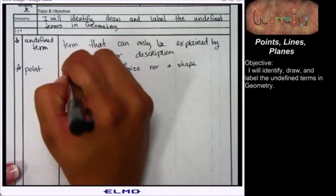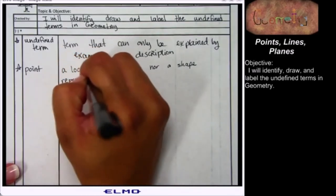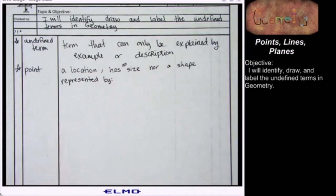And I'm going to ask you to draw points. I'm going to ask you to draw something that has no size. What? I'm going to ask you to draw something that has no shape. What? We can't actually draw a point.